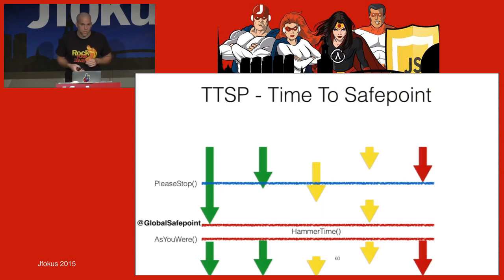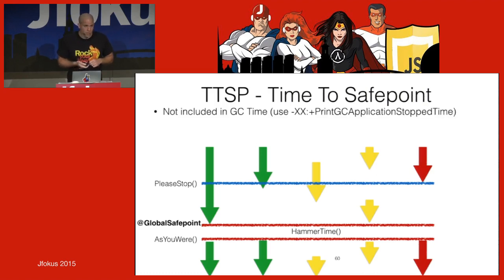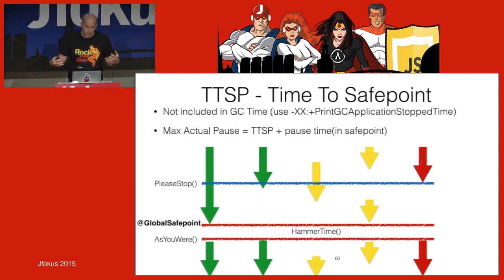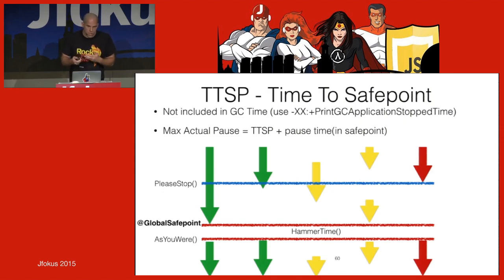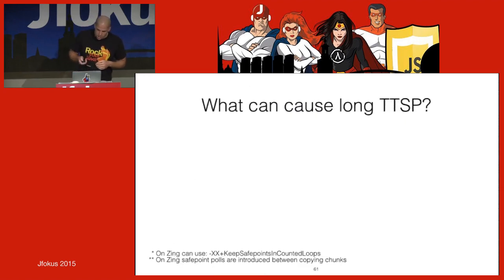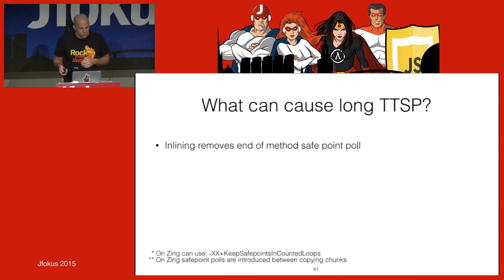The maximum actual pause is time-to-safepoint plus the GC pause time. You can add a JVM flag to your GC logging to see time-to-safepoint in your logs. What causes a long time-to-safepoint? Inlining removes end-of-method safe-point polls.